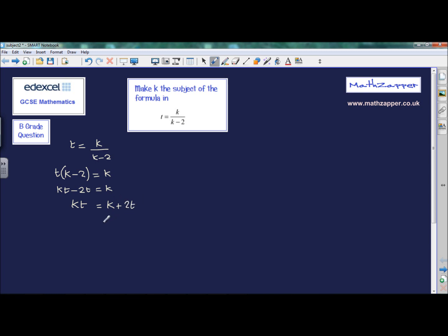And now what I'm going to do is subtract k from both sides. Be careful at this stage, don't think that you can subtract this k, because this is multiplying t, so it can't be subtracted. But we can still subtract k from both sides.